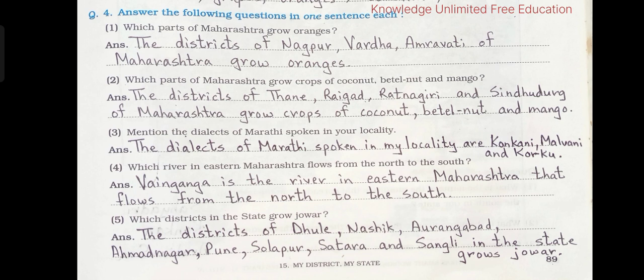3. Mention the dialects of Marathi spoken in your locality. The dialects of Marathi spoken in my locality are Konkani, Malwani and Korku. Children, you can change the dialects as per your locality.